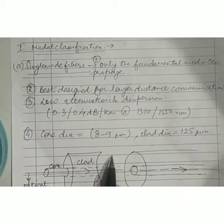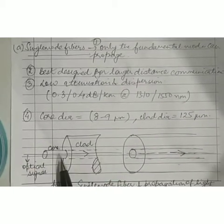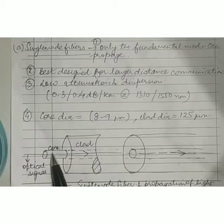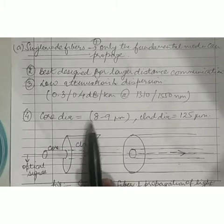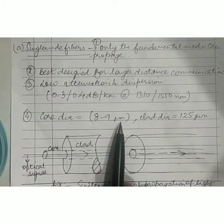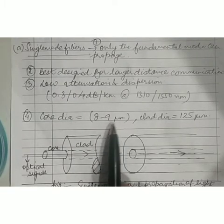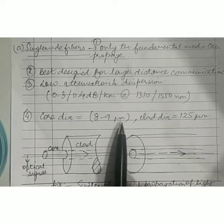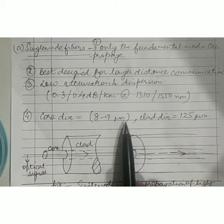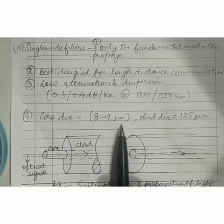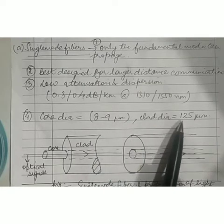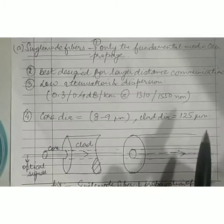Because of this low attenuation and dispersion, single mode fibers can be effectively used for longer distance communication. Since there is only one single mode traveling inside the core, the core diameter can be small and is in the range of 8 to 9 micrometers. This can vary depending on the type of fiber or application, but generally it is in the range of 8 to 9 micrometers. The cladding diameter can go up to 125 micrometers.